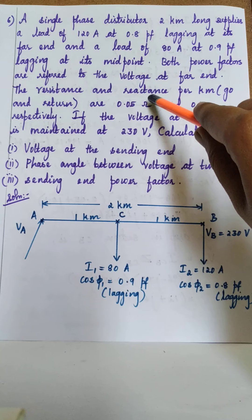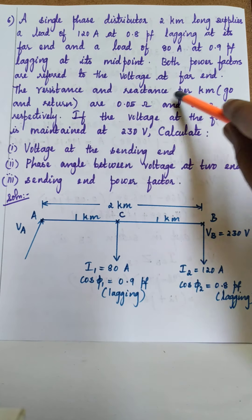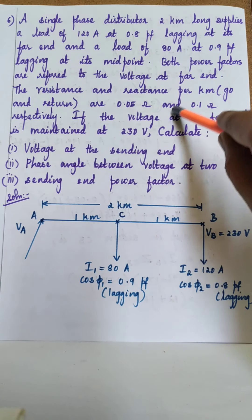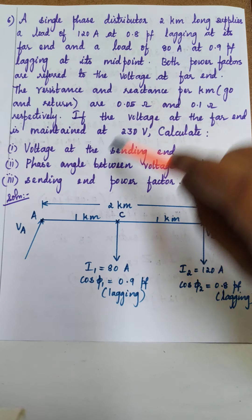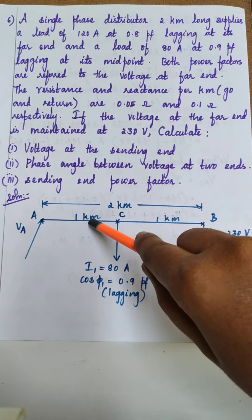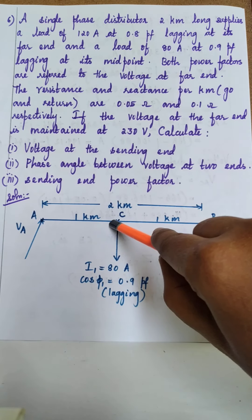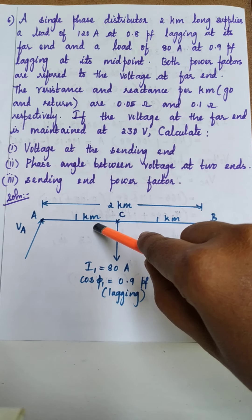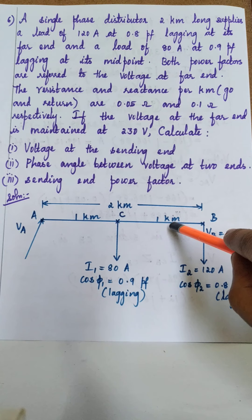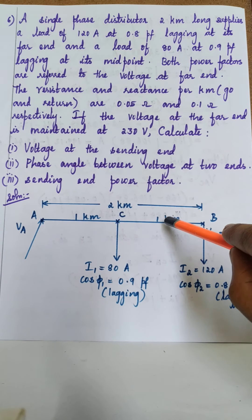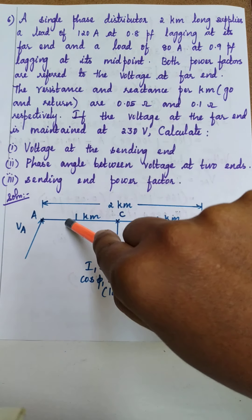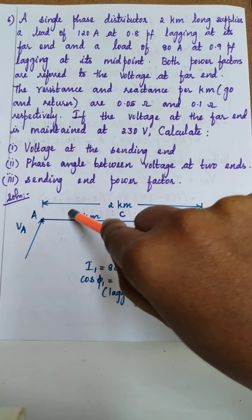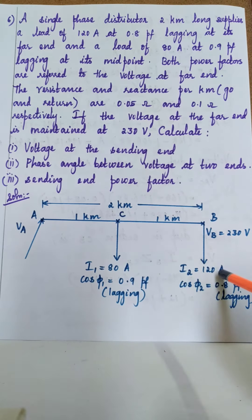The resistance and reactance per kilometer is 0.05 + j0.1, so since section AC is 1 km, ZAC = 0.05 + j0.1. ZCB is also 0.05 + j0.1. The current IAC is the sending end current, which equals I1 plus I2.